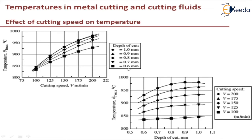The workpiece material has a Vickers hardness number of 250, with a feed of 0.008 inches per revolution, or 0.2 mm per revolution. The rake angle is 5 degrees, the clearance angle is 5 degrees, and no cutting fluid is used. Under these conditions, you can see that as cutting speed increases, the maximum temperature also increases.